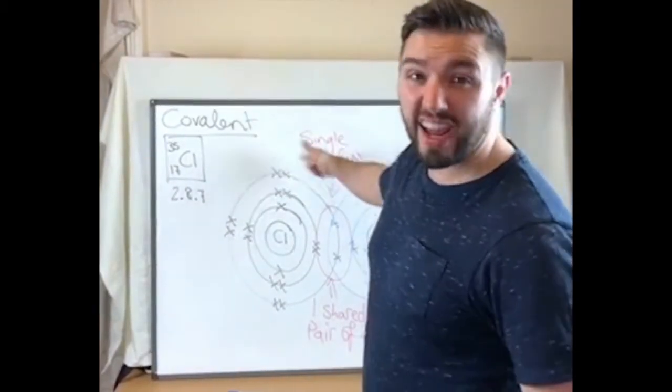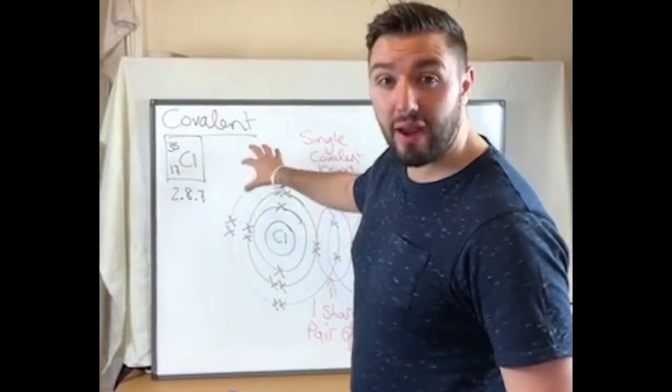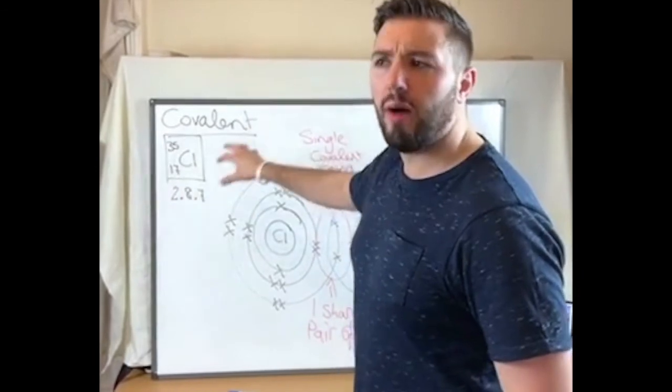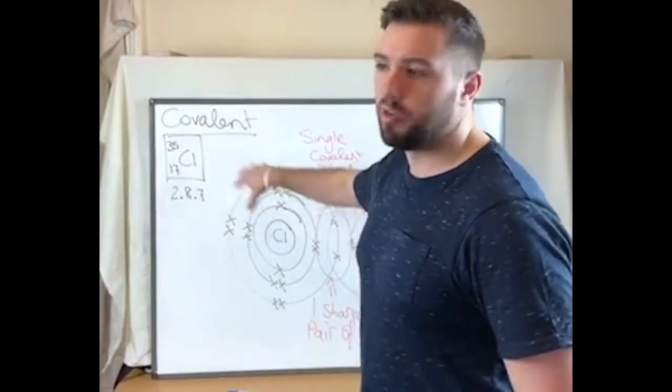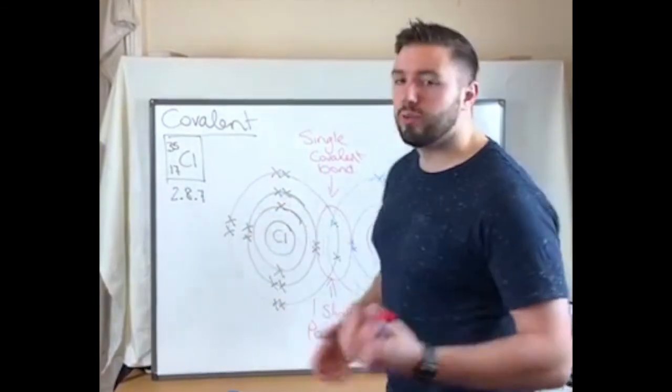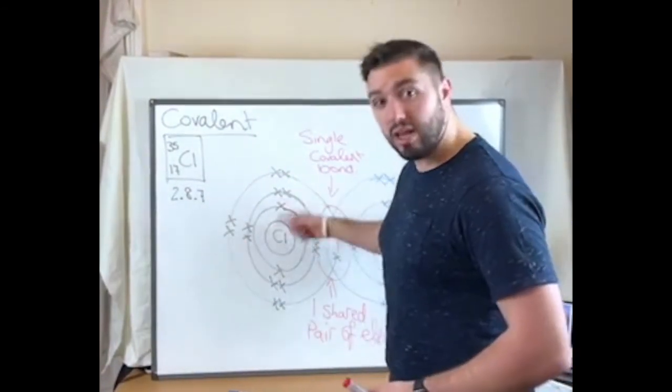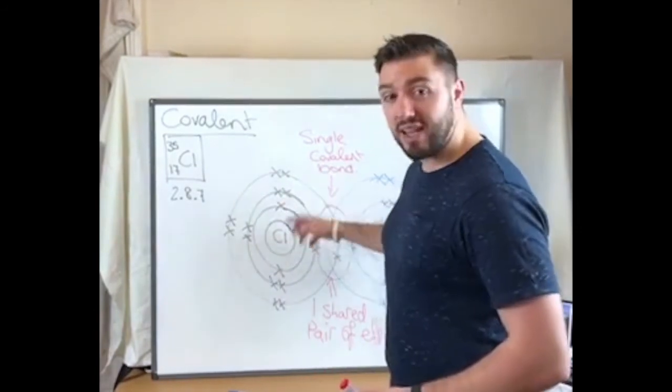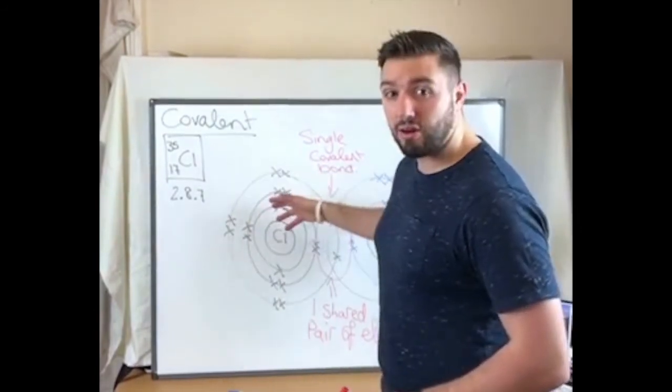In an exam most of the time they're actually only gonna ask you to fill that outer shell at the very end, because if you know how many should be in the outer shell then you probably know how to fill the other shells beforehand. But generally if you're someone who really struggles, always stick to the rule of you put two in that first shell, then you put eight in the second shell, and then you put up to eight in the third as well.